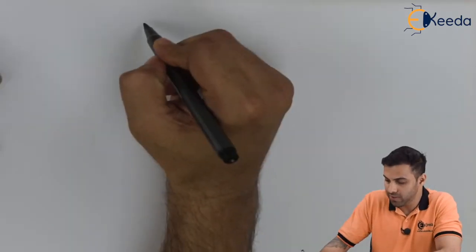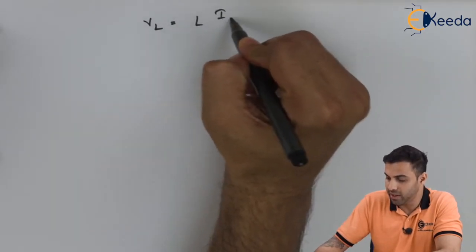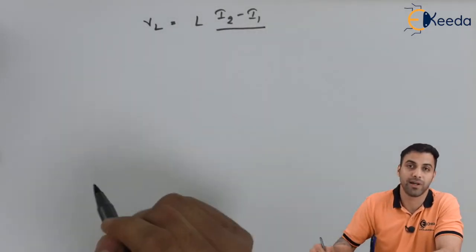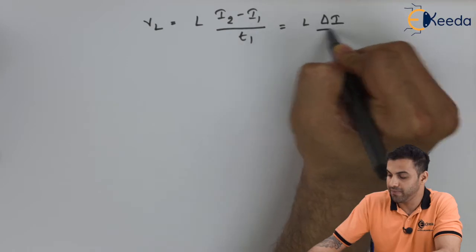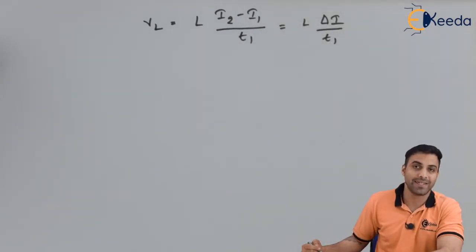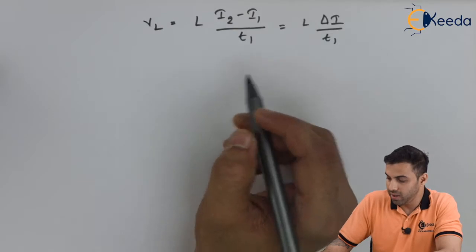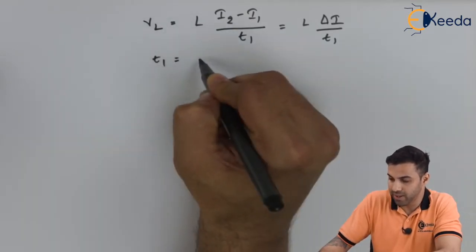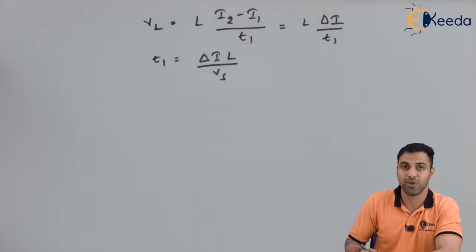Now let's calculate the voltage across the inductor. VL, the voltage across the inductor, is equal to L times (I2 minus I1) divided by T1, which equals L times delta I divided by T1, where I1 is the initial inductor current and I2 is the peak inductor current. The inductor charges from I1 to I2 during time 0 to T1. With this formula, T1 equals delta I times L divided by Vs.